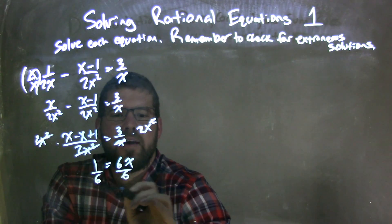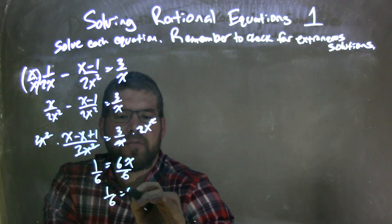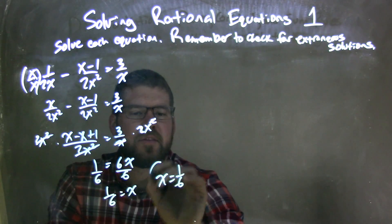I then divide by 6 on both sides, giving me 1 sixth is equal to x. So right here, x equals 1 sixth, nice and neat.